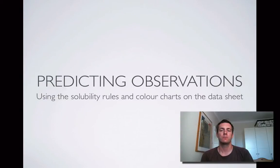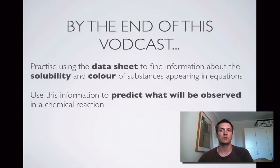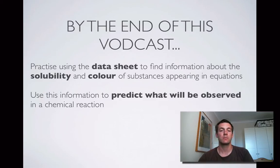Hello and welcome to this third film from the Reactions and Equations topic. Now that you know how to write equations, this film deals with predicting the observations for a reaction, and it teaches you how to use the datasheet to find out some information — specifically about solubility and colour — and we'll use that information to predict what we're going to see happening in a reaction.